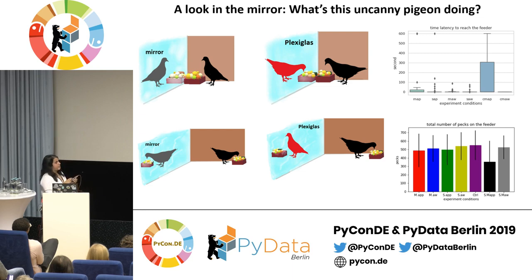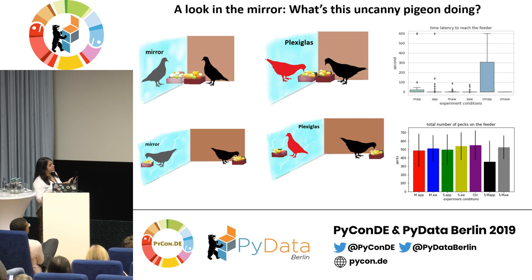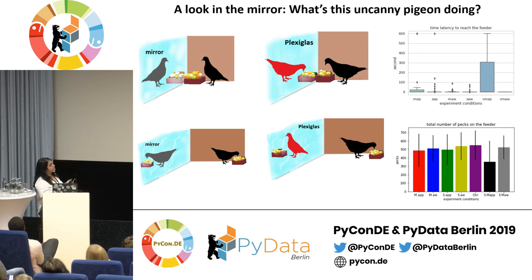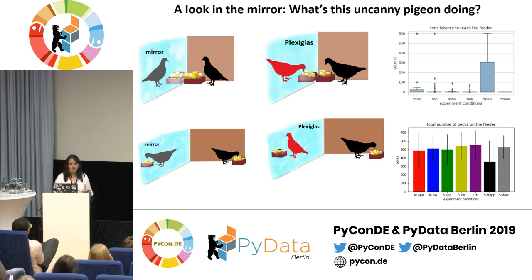First we wanted to check basic behavior. The first measure was approaching behavior — how long it takes for the pigeon to reach the feeder when food is in front of the mirror, in front of the stranger pigeon, or on the opposite side. We observed that time latency didn't show a significant effect, especially comparing mirror-approaching, stranger-approaching, mirror-away, and stranger-away conditions. We also did one more experiment checking the habituation effect of the mirror and measured total number of pecks to the feeder — again no significant effect was observed.